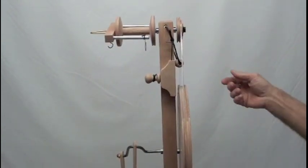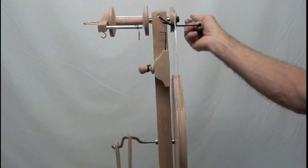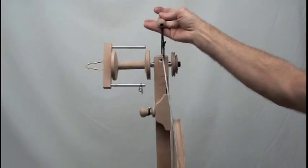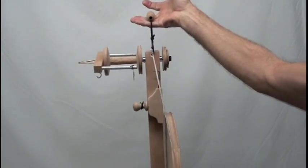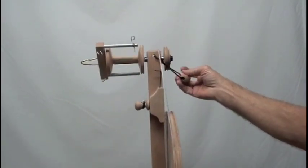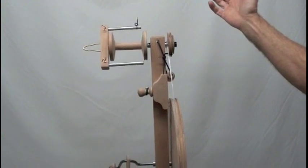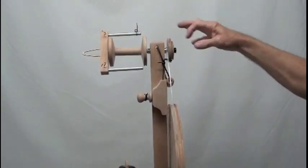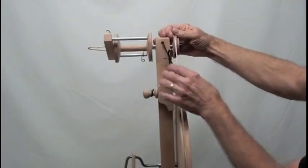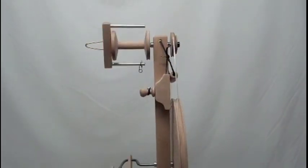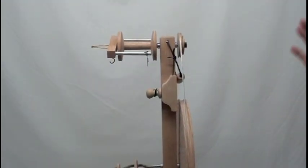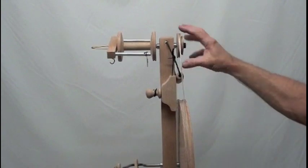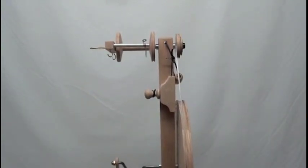When you get ready to move your wheel, just take the handle and pick it up. You see the drive band will pop up here on top of the upright. Set it wherever you are going to put it. And if you are not going to use it, let the drive band drop down onto the axle. If you are going to continue using it, just put it back on. Any time you are not going to be using your spinning wheel, please release the tension on the drive band.